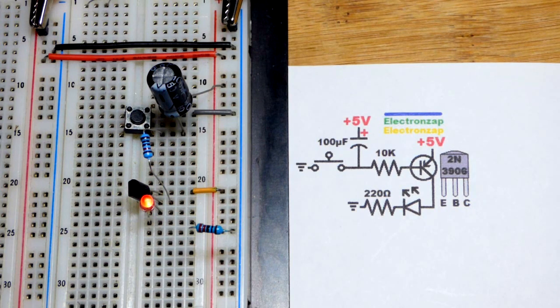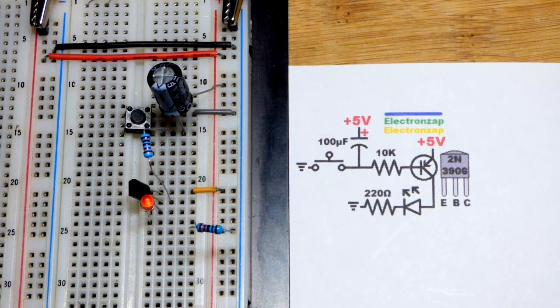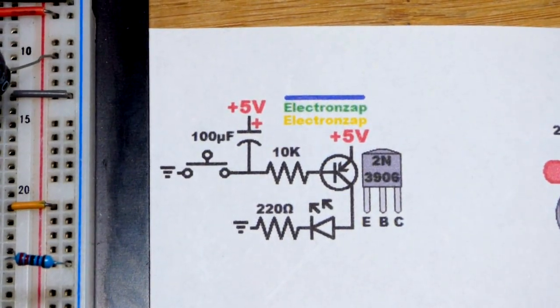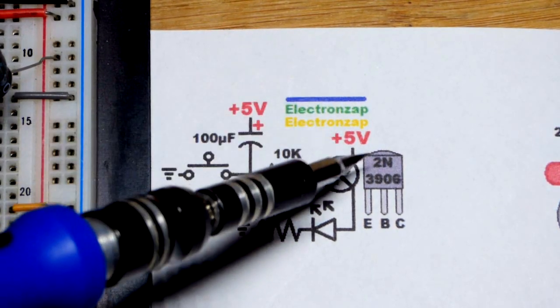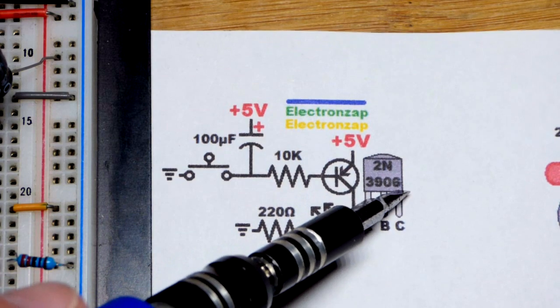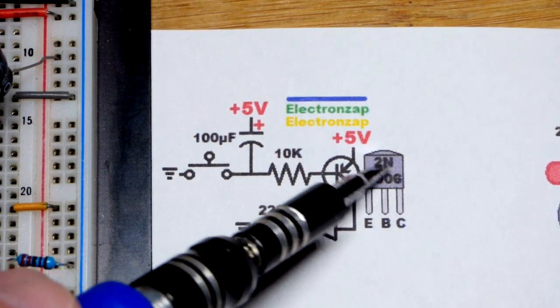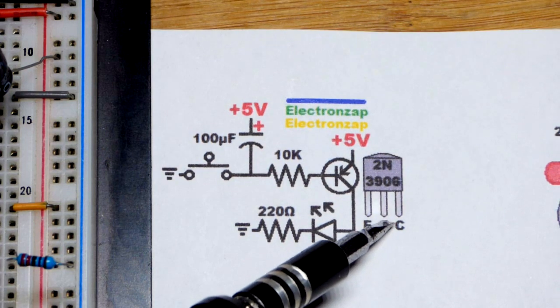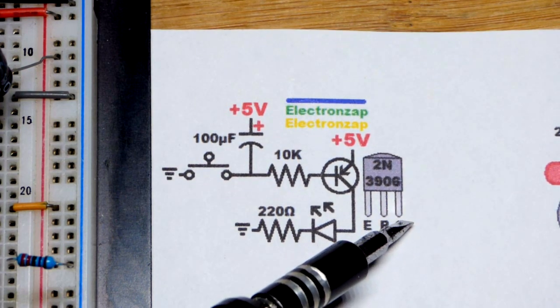This video we're using a PNP bipolar junction transistor. The wiring is the same except for opposite polarities, so now we've got the emitter to the positive side of the power supply. We're using the 2N3906. Looking at the flat side, the emitter is the left pin, the base is the middle pin, and the collector is the right pin.